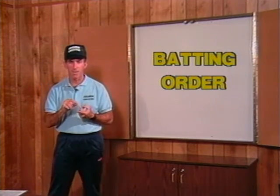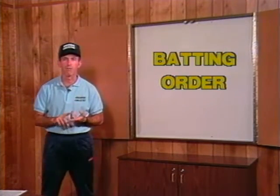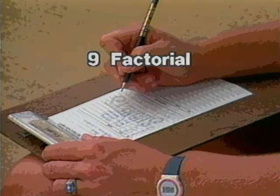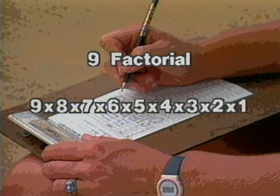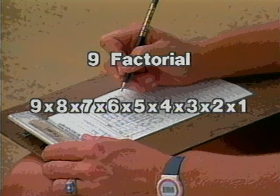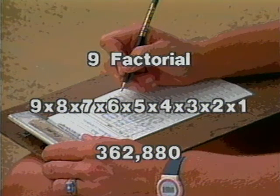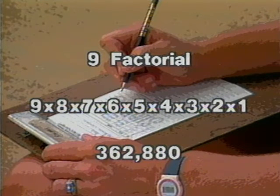It comes from a mathematical term called factorial. The number of batting orders for nine players is what's called nine factorial. That equals nine times eight times seven times six times five times four times three times two times one, and that equals 362,880. That's how many different batting orders you can make with nine players in a fast-pitch softball game.